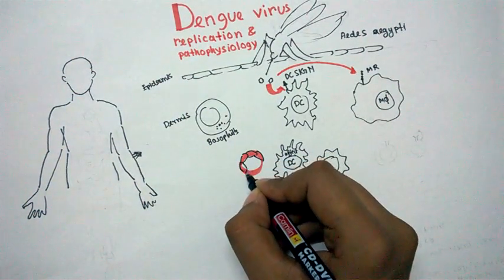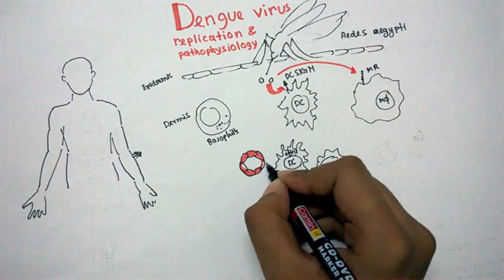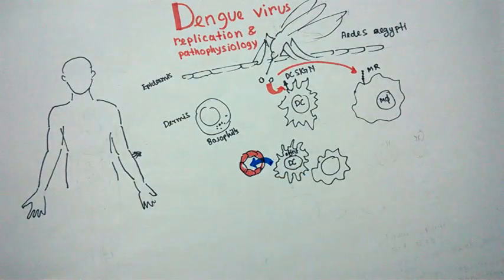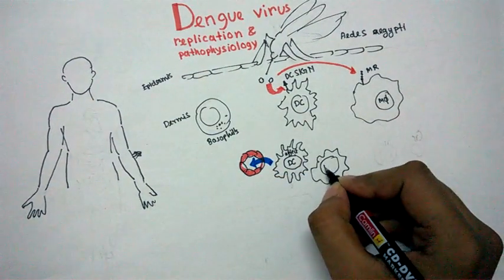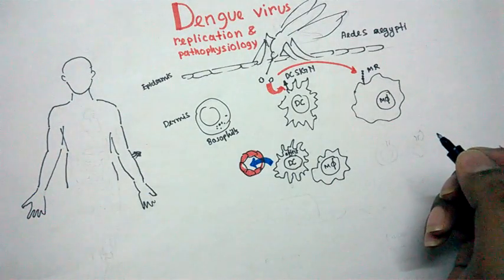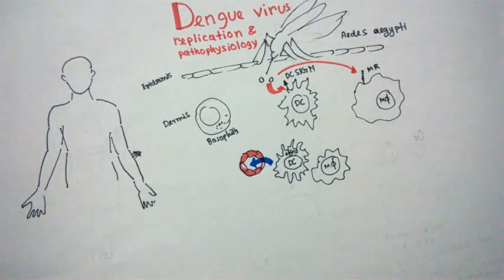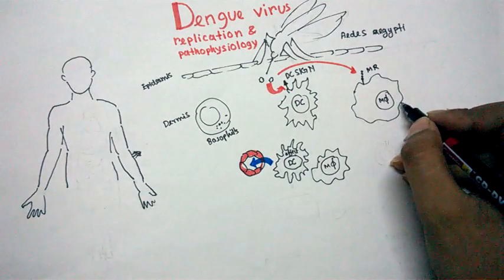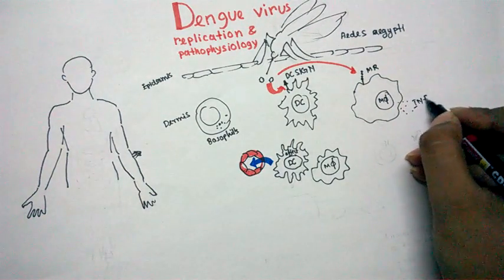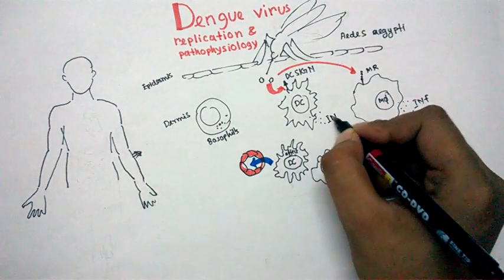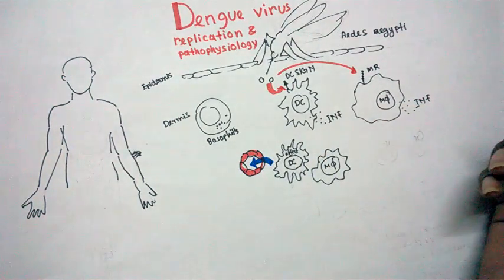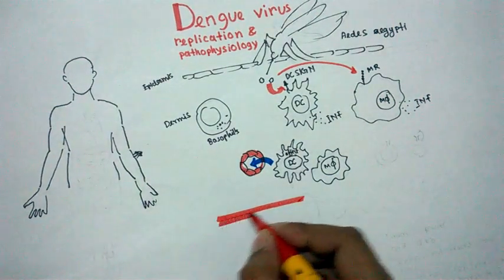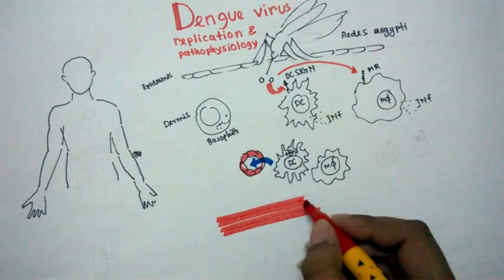They will migrate via this lymph vessel and go to other lymphoid organs and this is how the infection got spread into the systemic circulation. When these macrophages are infected and these dendritic cells are infected they will secrete some interferons. Both of them will secrete some interferons.